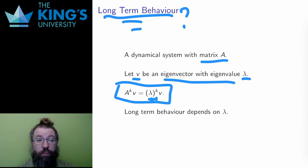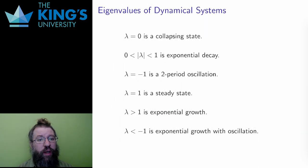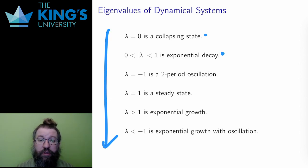Secondly, and more importantly, the long-term values determined by lambda. How are the long-term values determined by this eigenvector? Well, there are six cases. If lambda equals zero, then this is a collapsing state, and all future states are simply the zero vector. If zero is less than the absolute value of lambda is less than one, then the sequence of states displays exponential decay. The long-term behavior is exponential decay of the original vector.